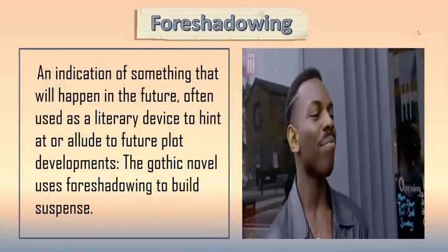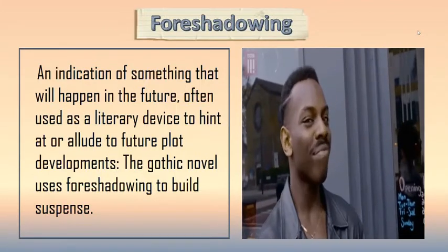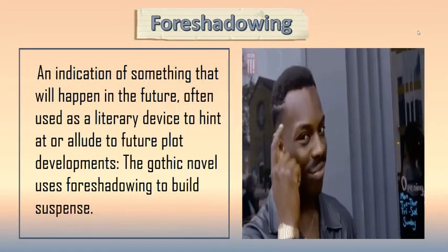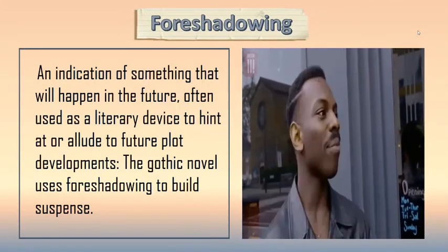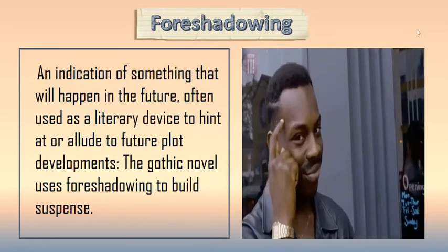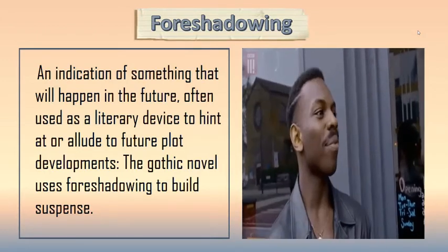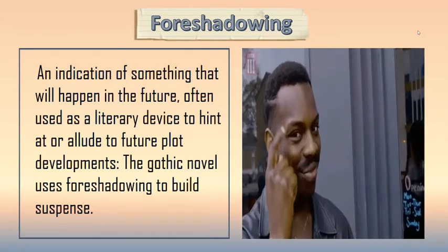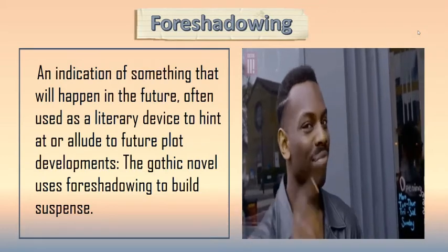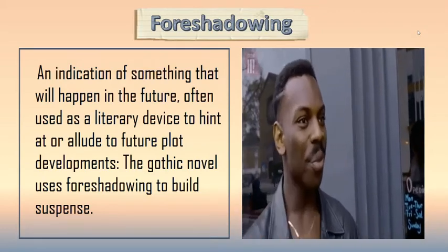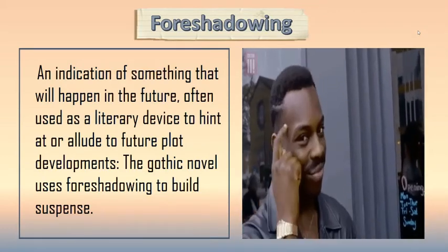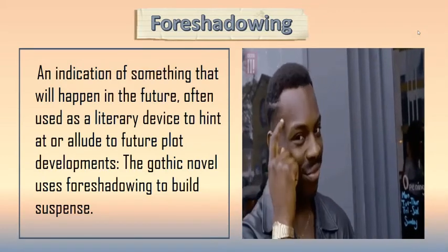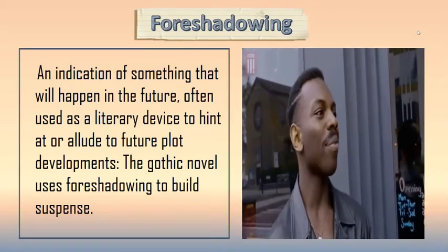The third is foreshadowing — an indication of something that will happen in the future. Often used as a literary device to hint at or allude to future plot developments, the Gothic novel used foreshadowing to build suspense as well.